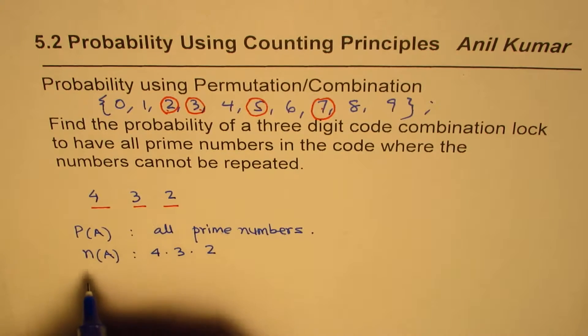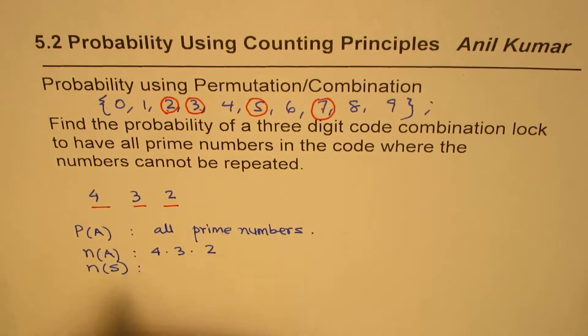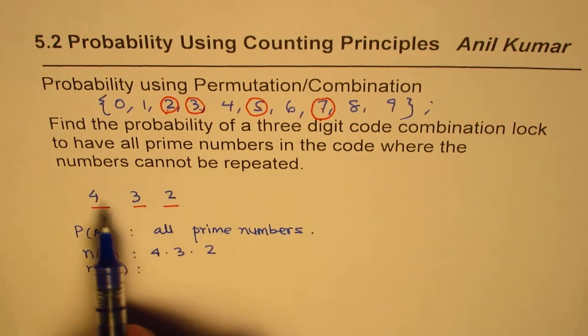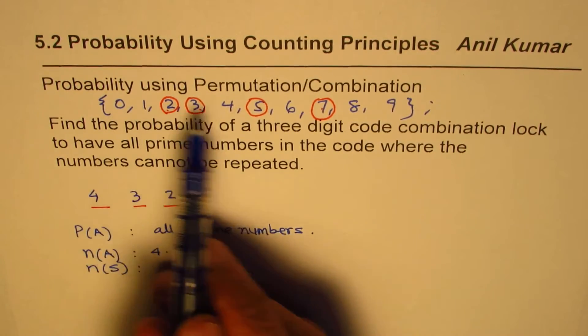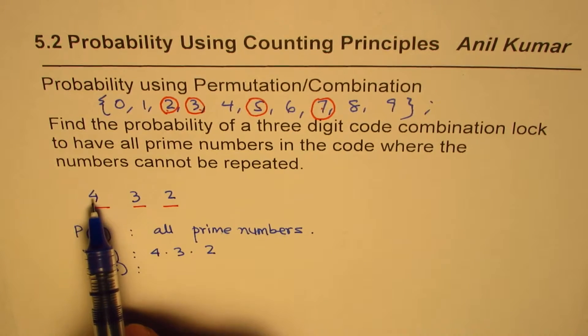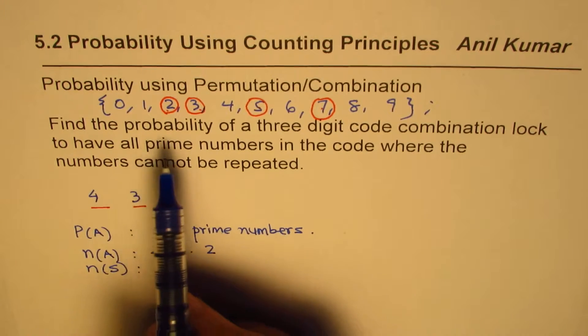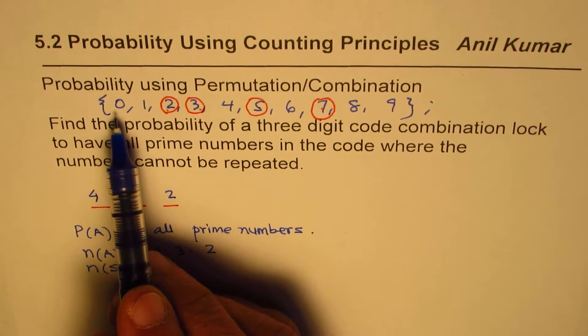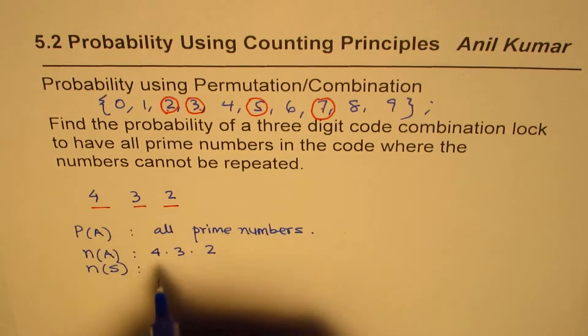Now, how many are total outcomes? All possible outcomes are, we have 10 numbers. So in the first place, we could place any of these. In a combination lock, you can put 0 also. So this will be 10 times.